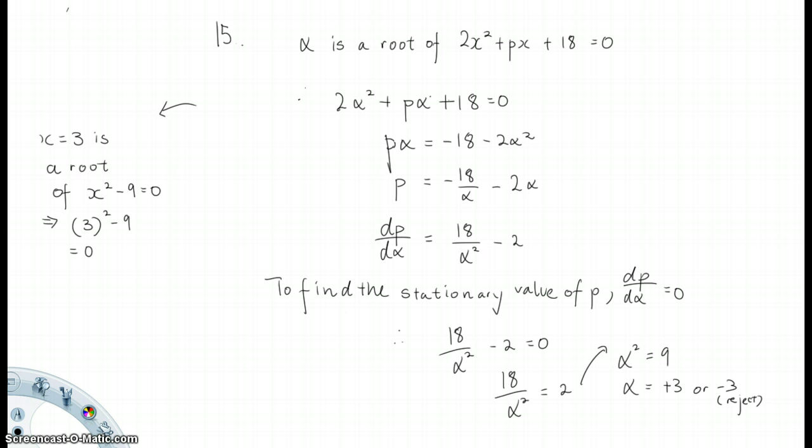So, next, we have to determine whether this value of P is a maximum or a minimum. That means you have to determine the nature of the roots. So, we have to do the second derivative. d²P/dα² will be equals to minus 36 over alpha cube. So, for alpha to be equals to 3, we can clearly see d²P/dα² will be smaller than 0. This implies alright, P is a maximum for alpha equals to 3.